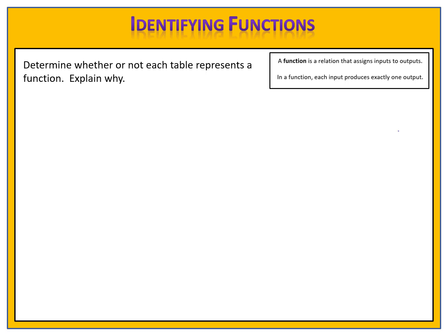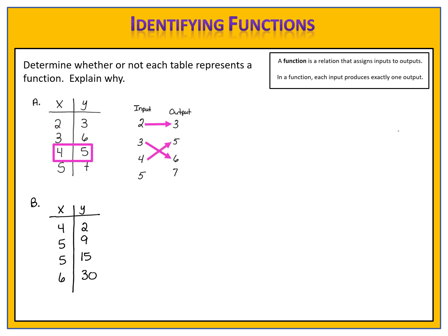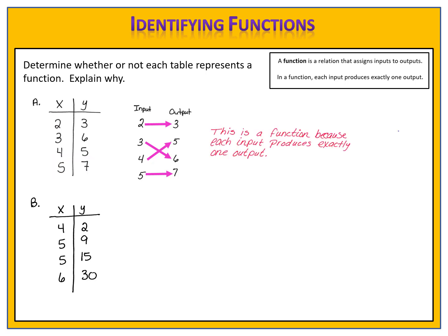Let's extend this idea to an input and output table. Here we have two input and output tables. In the table, the x's are the inputs and the y's are the outputs. (2,3) means input 2 with output 3. (3,6) means input 3 with output 6. (4,5) means input 4 with output 5. (5,7) means input 5 with output 7. We ask ourselves if each input produces exactly one output. It does, and therefore this relation is a function.